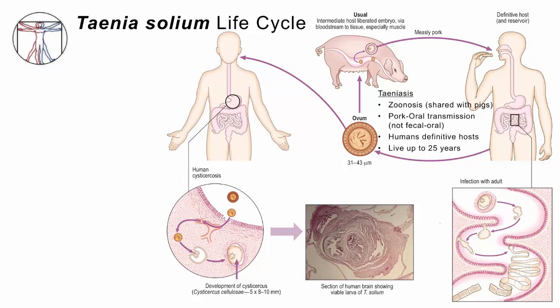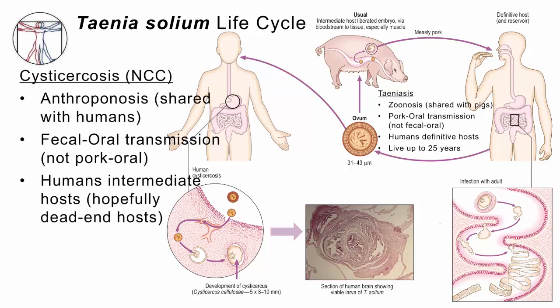The problem is the mechanical process of having a cyst in a delicate part of the body. If you have a cyst in your tongue, it's probably not too bothersome. If you have a cyst in your brain, it may cause significant complications. So cysticercosis is sometimes called neurocysticercosis, or NCC. It can happen anywhere in the body, but it usually presents clinically when it causes seizures or other neurologic complications. This is an anthroponosis — shared with other human beings — transmitted via fecal-oral route, and here the human is playing the role of intermediate host, hopefully a dead-end host.